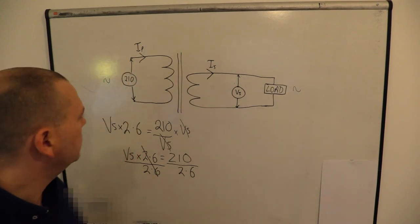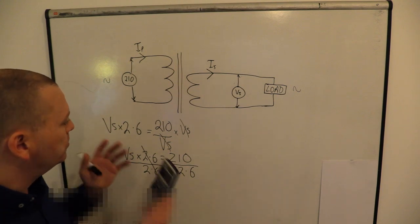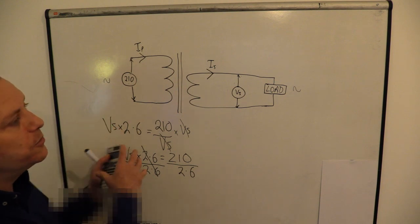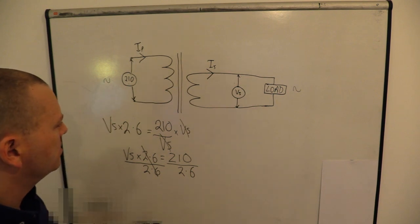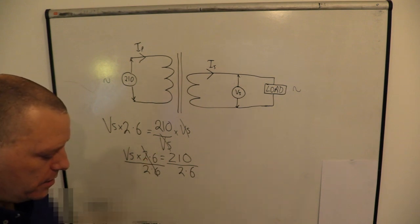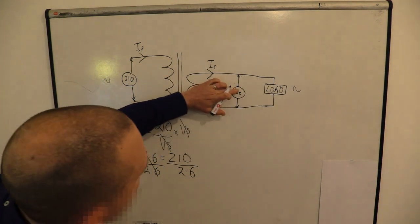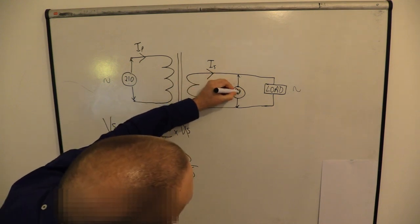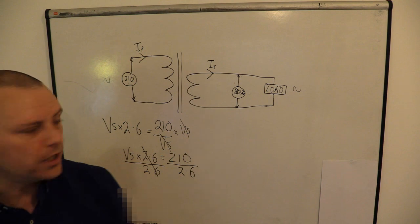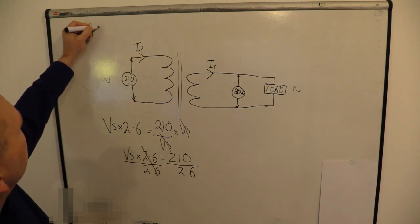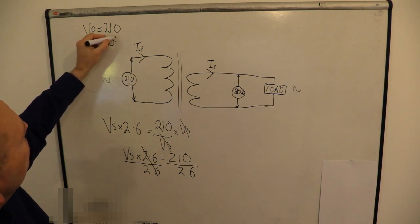There's more than one way of getting there — we could have used the VA power value, divided it by the primary voltage to get the primary current, and then used that in another way. There's always more than one way to skin a cat! 210 divided by 2.6 gives us 80.77 volts — let's put that in as 80.7 volts. So we've got our secondary voltage. It's always good to keep track of what you've got and what you haven't: Vs = 80.7 V, primary turns = 23, secondary turns = 9.